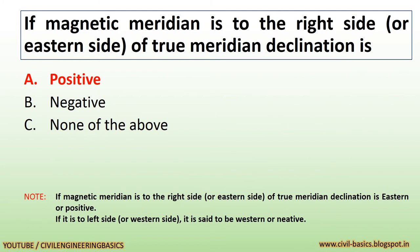If the magnetic meridian is to the right side, or eastern side, of the true meridian, the declination is positive (eastern). If it is to the left side, or western side, it is said to be western or negative.